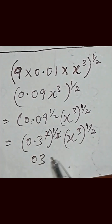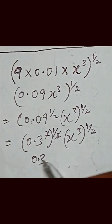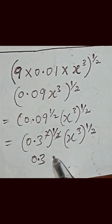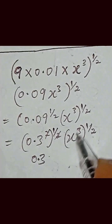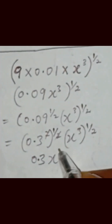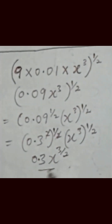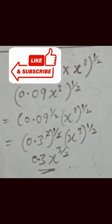So we have 0.3, then with this x multiplied by half — now we have 3 over 2. And that gives us the final expression: 0.3 times x to the power 3 over 2.